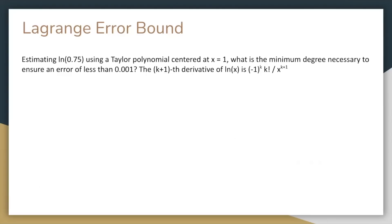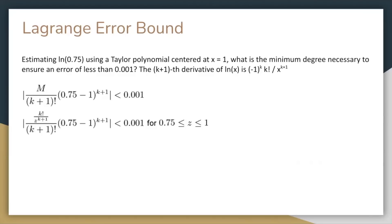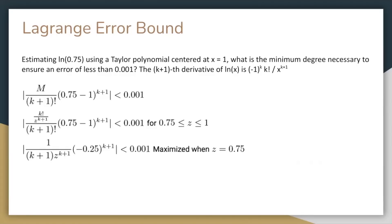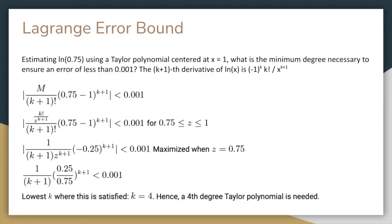Since this is a tricky concept, here is another example. Estimating ln of 0.75 using a Taylor polynomial centered at x equals 1, what is the minimum degree necessary to ensure an error of less than 0.001? It gives you the (k+1)th derivative of ln of x. So once again, we plug the values into the formula. Since we're given the information about M, we can plug it in, ignoring the negative 1 to the n since we're dealing with magnitude. z is between 0.75 and 1. After simplifying, notice that z to the k plus 1 is in the denominator, meaning the maximum value of M is achieved when z is as close to 0 as possible, so z equals 0.75. We end up with this inequality. Using a calculator, you can try a few integer values for k, and you'll find that the lowest value where this is satisfied is k equals 4. So a fourth degree Taylor polynomial is needed.